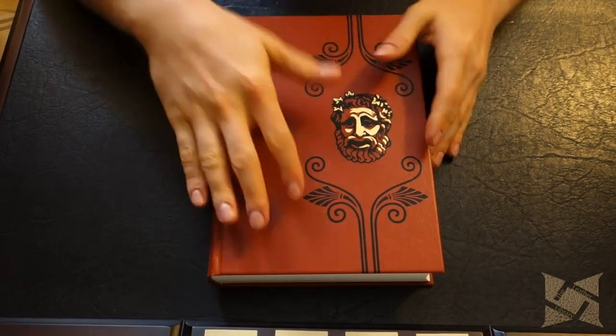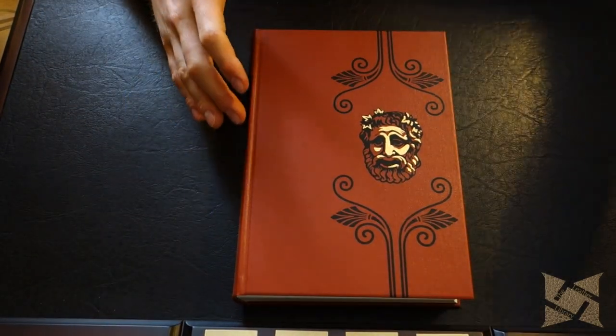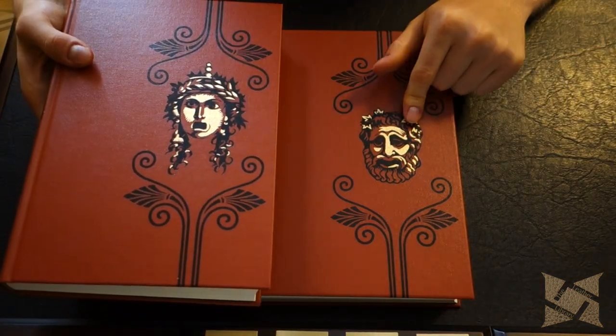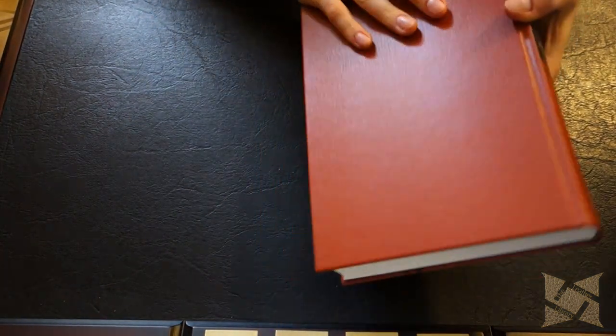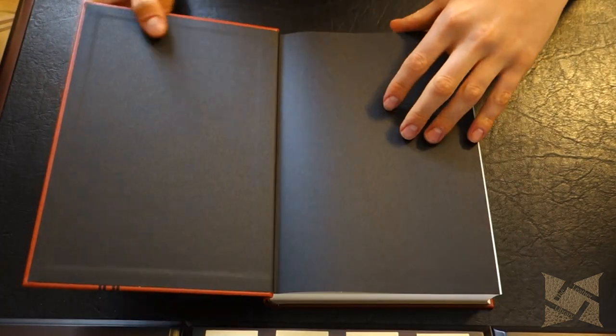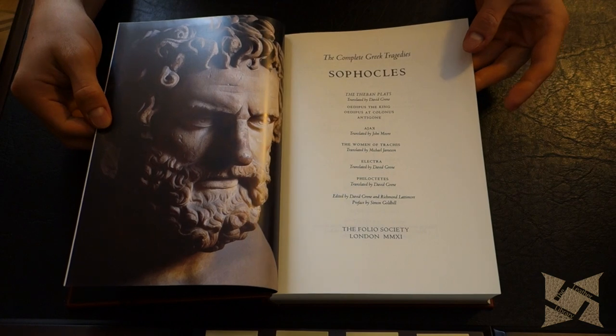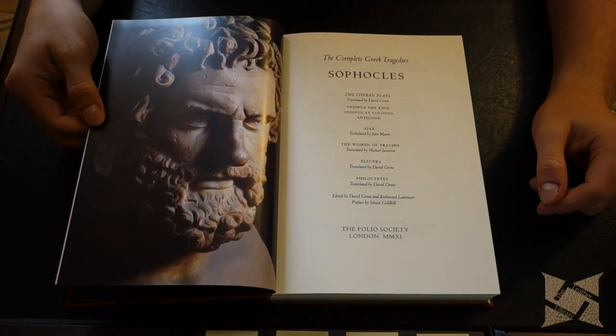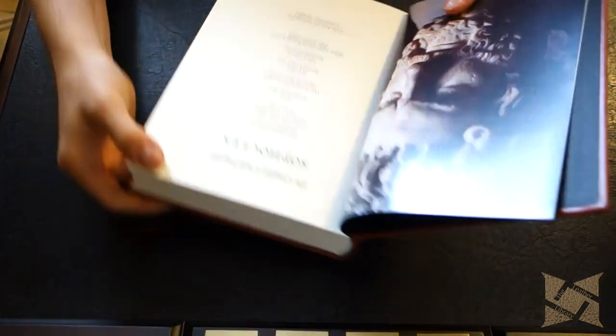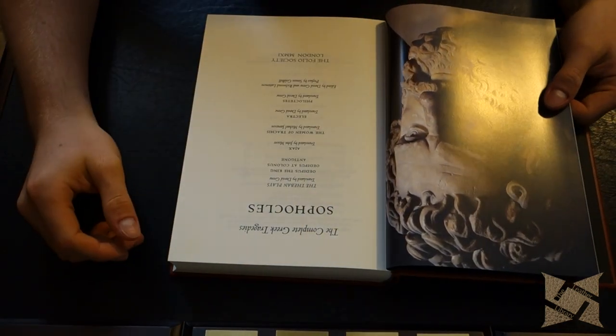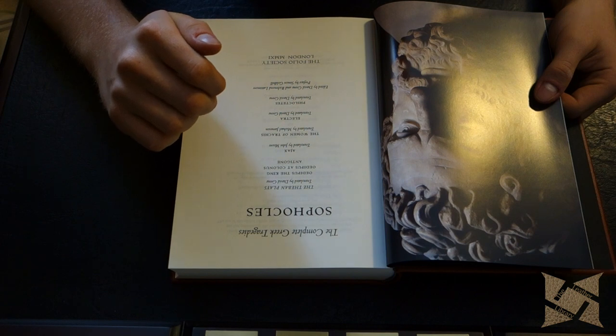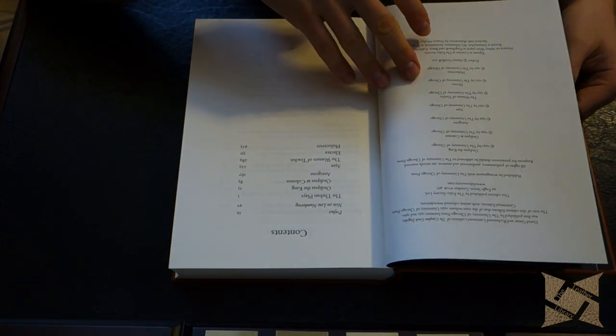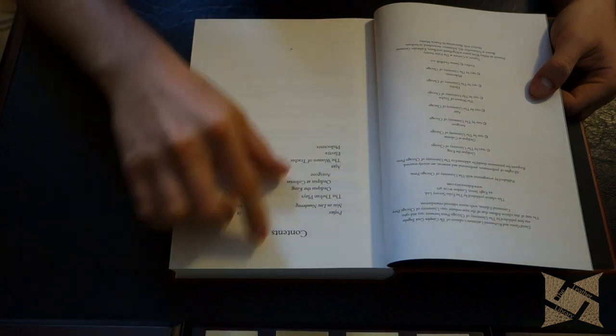Let's jump into the next volume. This is Sophocles, so there's one volume for Sophocles, one volume for Aeschylus. You can see a slightly different design on the front. Volume two there, and then the plain back. Let's jump to the table of contents. You got the Theban plays: Oedipus the King, Oedipus at Colonus, and Antigone. Ajax, the Women of Trachis, Electra, Philoctetes.